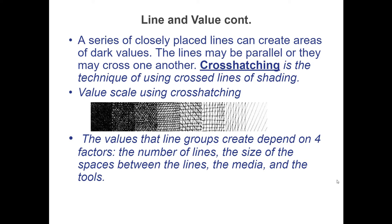When using lines and value together, there's a thing called crosshatching. Crosshatching is a series of closely placed lines to create darker areas. They could run parallel or cross each other. On the value scale below, on the left, lines have crossed over each other repeatedly and are super close together.